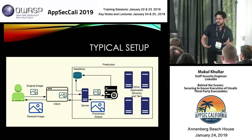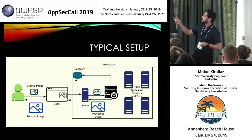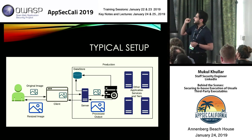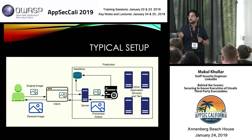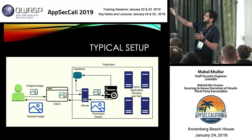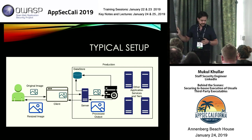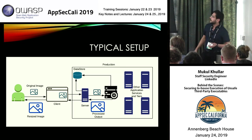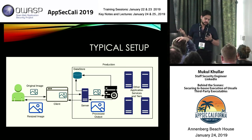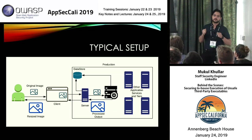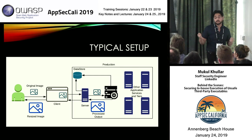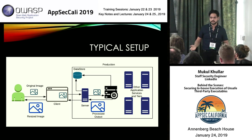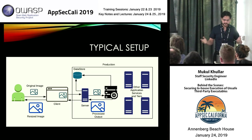A typical setup would look like this: you have an application server serving a web app to your users with a front end that has file upload functionality. Your image gets uploaded and asynchronously gets stored in your data layer and moves on to processing. That black processing box is where you would typically have your ImageMagick executable running on some server. You get the processed image back and it's presented back to the user — that's how a typical processing job would look.